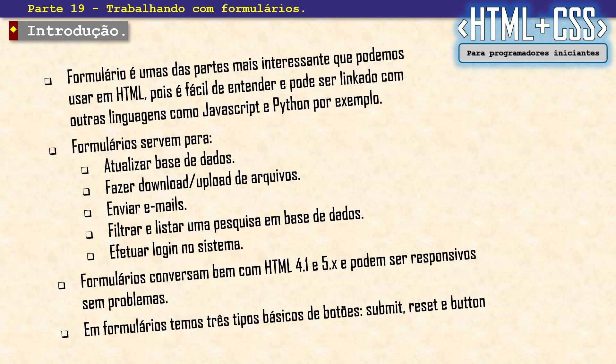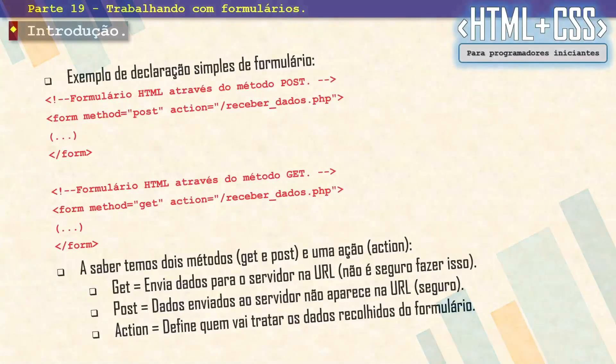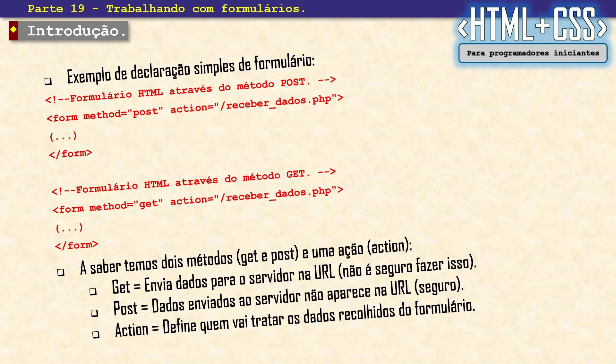Em formulários a gente tem três tipos de botões: o submit, o reset e o button. A declaração de formulário é bem simples — você olhou para a declaração e já sabe que ali vai acontecer um formulário. Temos o formulário HTML através do método POST e o formulário através do método GET.